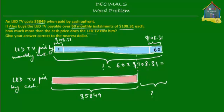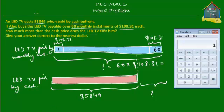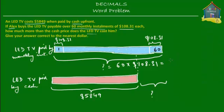First, let's find out what 60 times 108.31 is equal to. I'm going to use a calculator for that. And I'll do 108.31 times 60. And that's $6,498.60. So this is 6498.60. So it's $6,498.60.